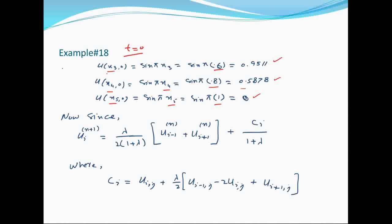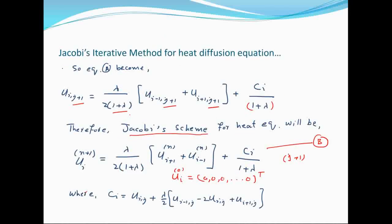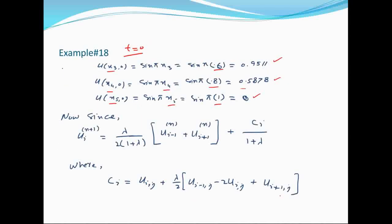t=0 पर अलग-अलग points x₁, x₂, x₃, x₄, x₅ पर values आ गई हैं। Jacobi method में एक scheme derive की थी — यह Jacobi scheme है जो last lecture में निकाली थी।